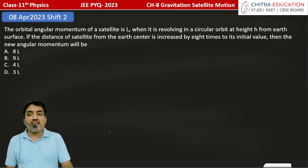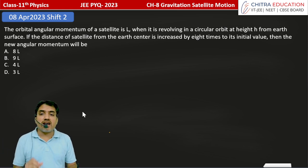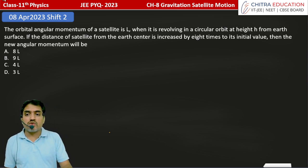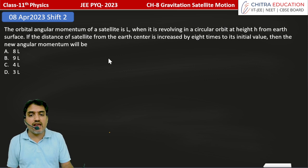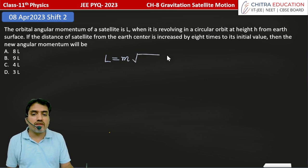As we discussed earlier, if we calculate angular momentum of a satellite, the formula we have is L equal to - what was the formula? L equal to small m in the bracket G capital M into R.